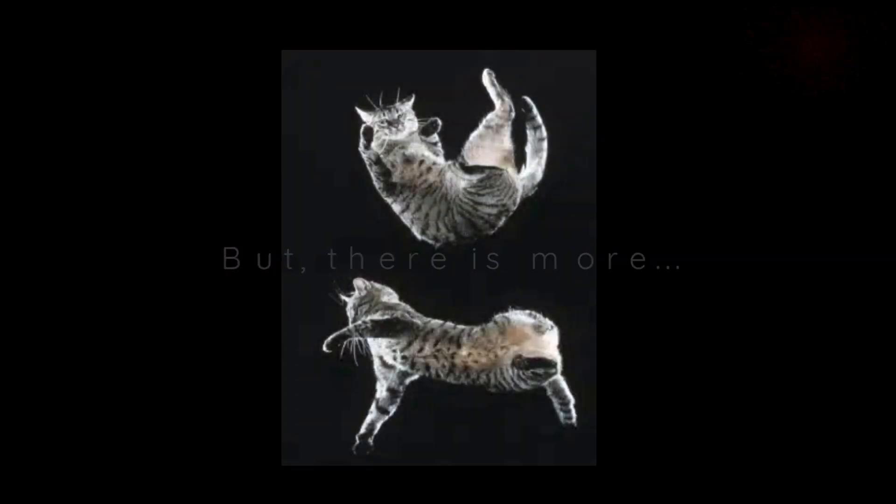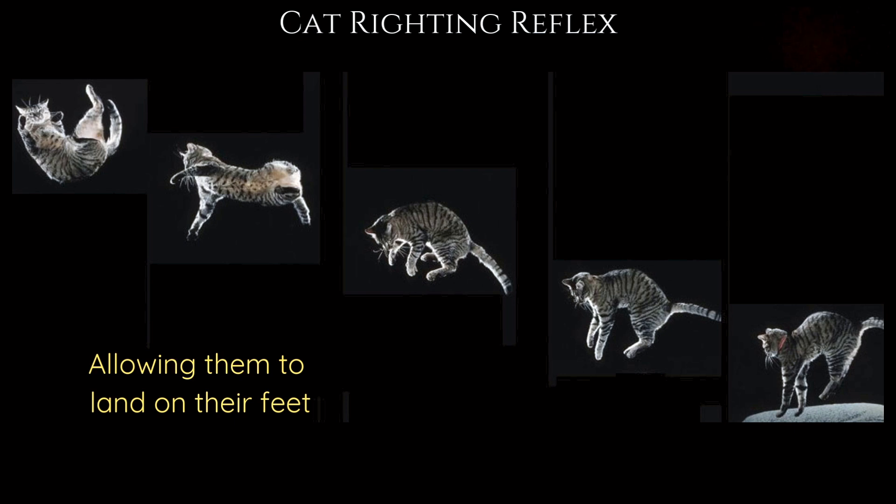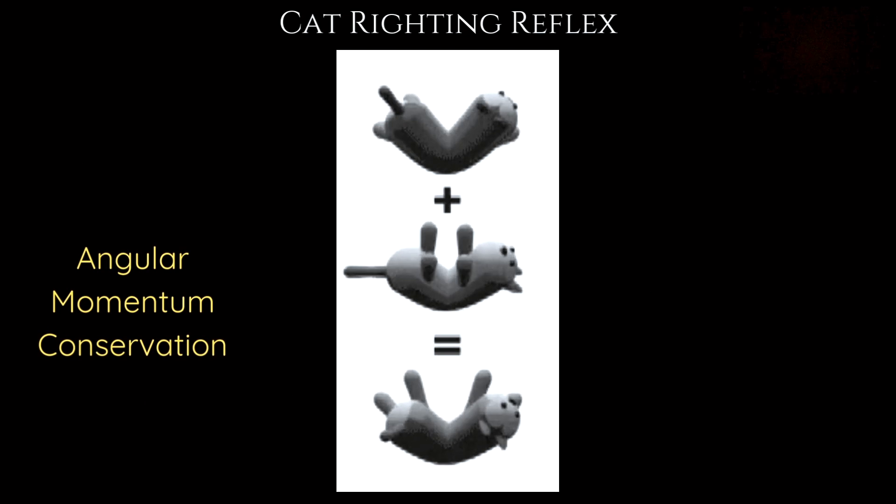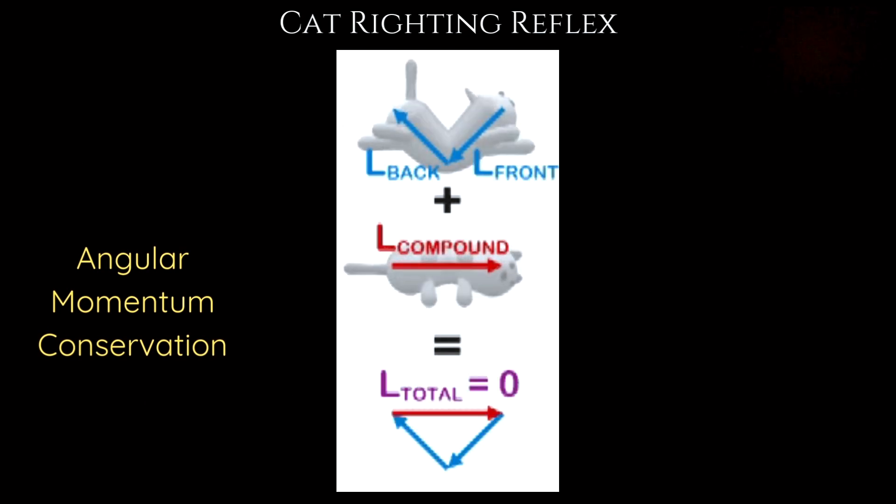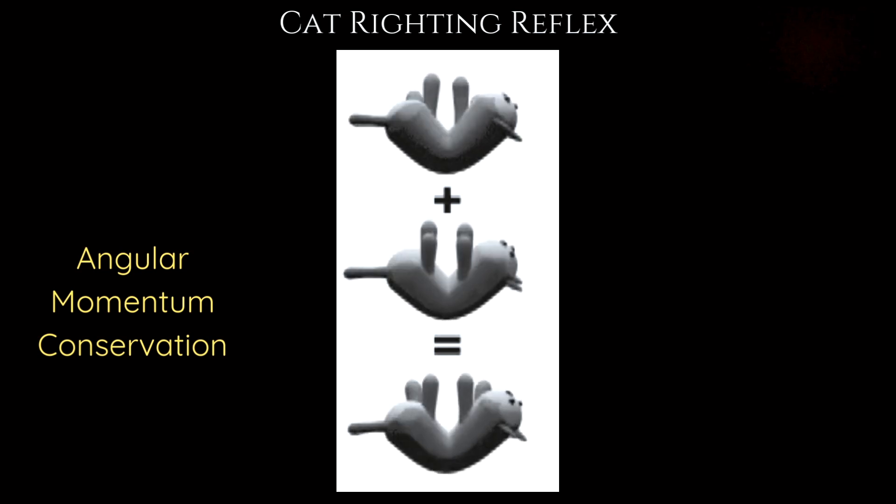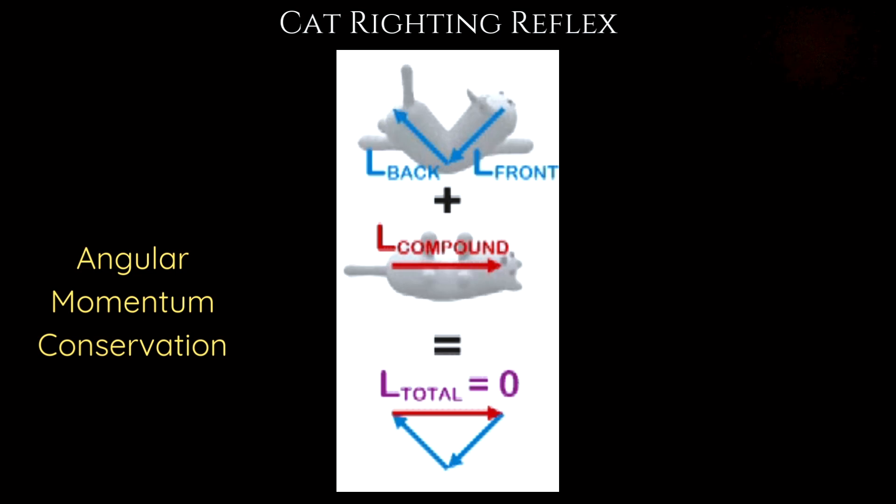But there's more to the story. Cats are equipped with a built-in survival mechanism known as the cat righting reflex. This reflex allows them to reorient their bodies mid-air, ensuring they land on their feet. It's a fascinating demonstration of angular momentum conservation. By twisting their flexible spines and adjusting the rotation of their front and back halves independently, cats can rotate themselves without any external torque. It's an incredible trick of physics and biology working together.